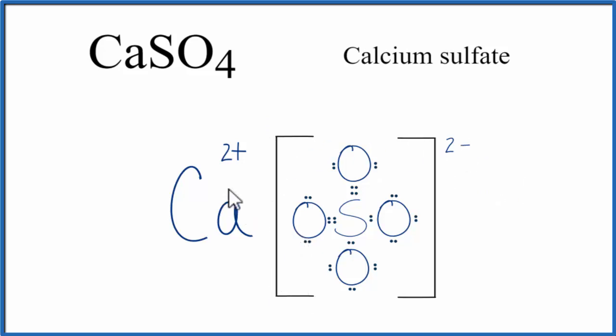We draw the brackets to show that the calcium lost those valence electrons, and that they're not sharing valence electrons like in a covalent bond.